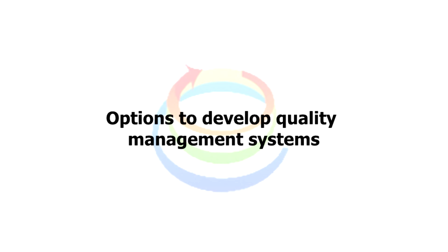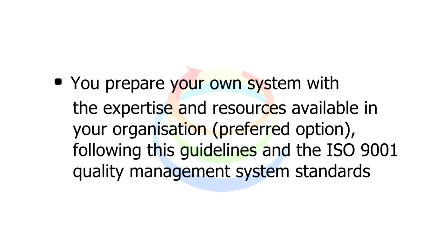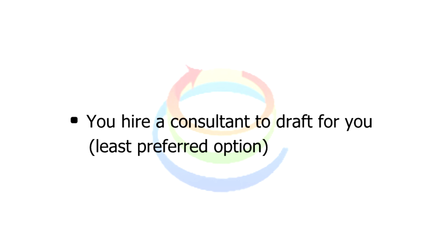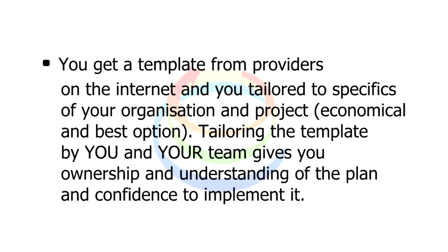Options to develop quality management systems: you have a few options available to get your construction quality management system. You can prepare your own system with the expertise and resources available in your organization, following these guidelines and the ISO 9001 quality management system standards. You can hire a consultant to draft it for you. Or, you can get a template from providers on the internet and tailor it to the specifics of your organization and project. This is the most economical and best option. Tailoring the template by you and your team gives you ownership and understanding of the plan and confidence to implement it.